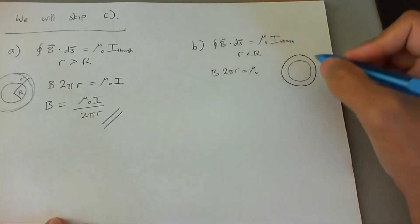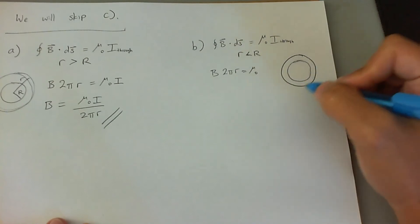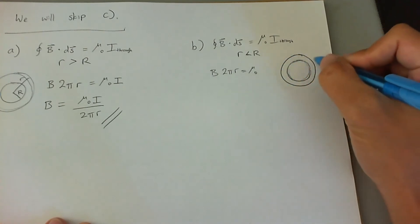Again, this is great because since the current density is uniform, we can figure out what fraction of the i goes inside this loop as opposed to the entire cylindrical wire. And you do that by looking at the fraction of areas. So this area is going to be pi little r squared, but then this circle is going to be pi big R squared. The whole wire is going to be pi big R squared.